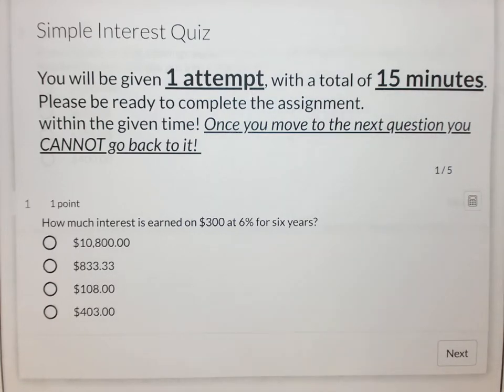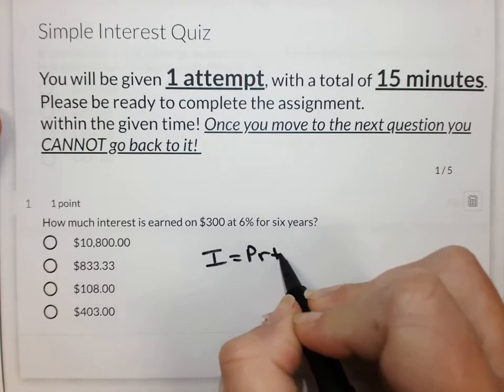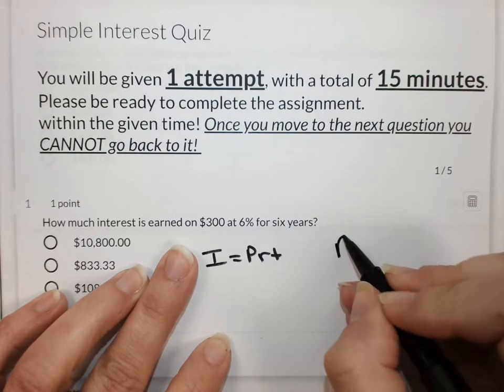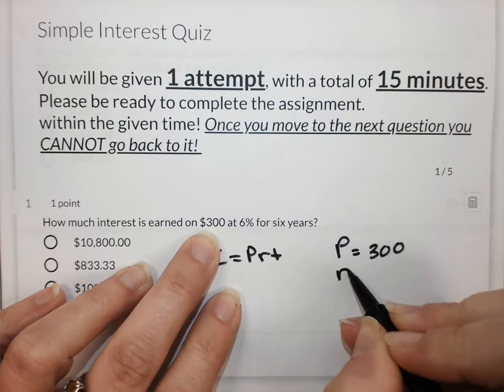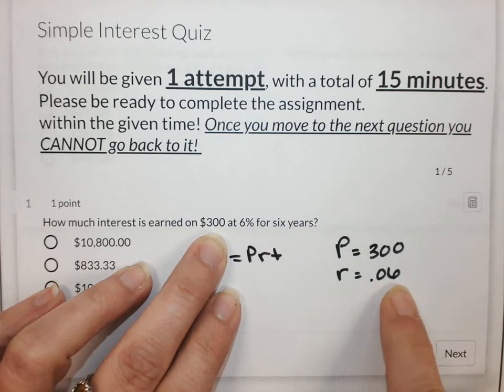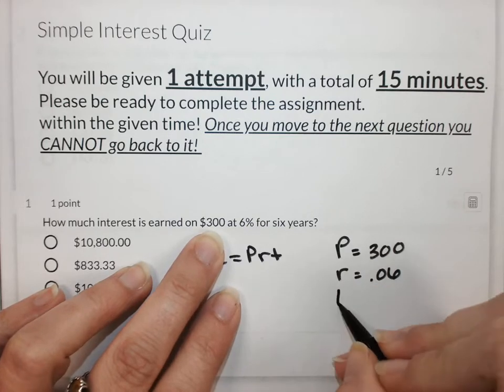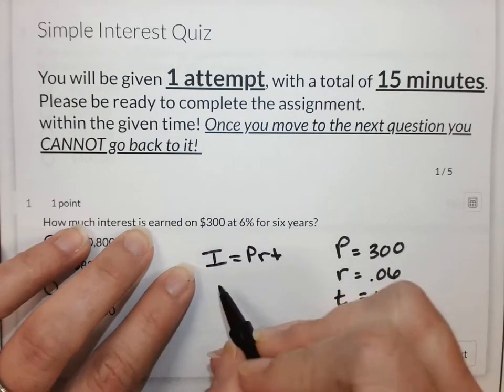This first one is saying how much interest is earned on $300 at 6% for 6 years. So we're going to say I equals PRT. Alright, how much interest is earned on $300? There's my P. My R is going to be .06. Remember we changed that percent to a decimal. And then my time is 6 years. So we're straight plugging in these values.